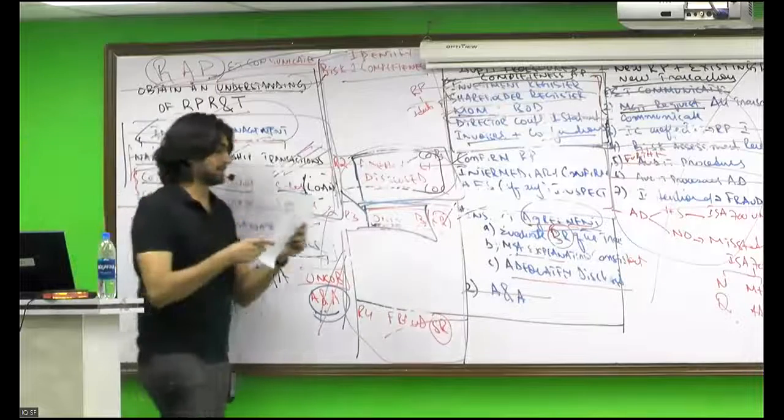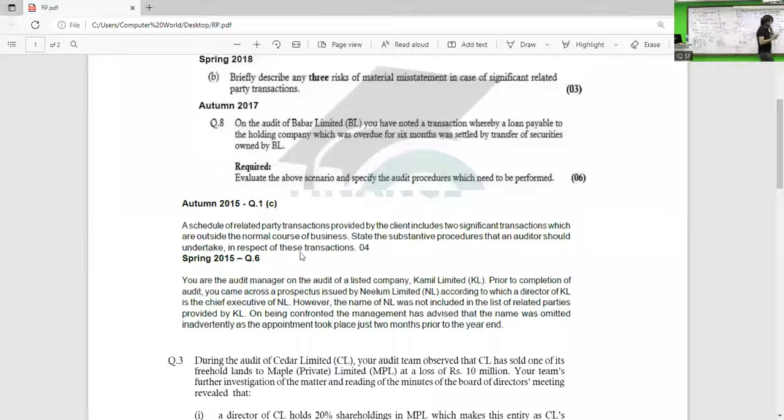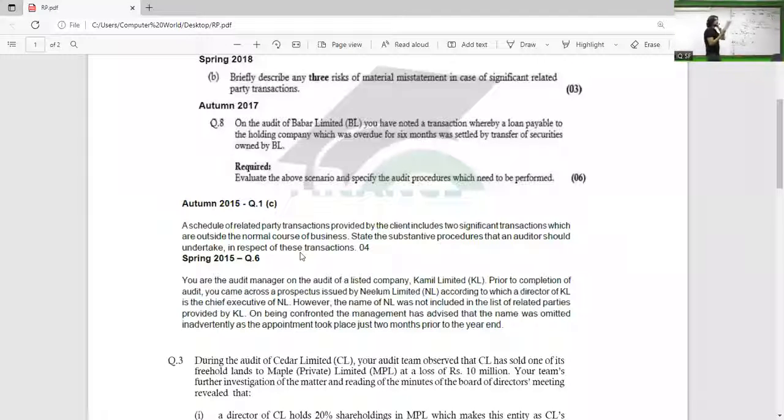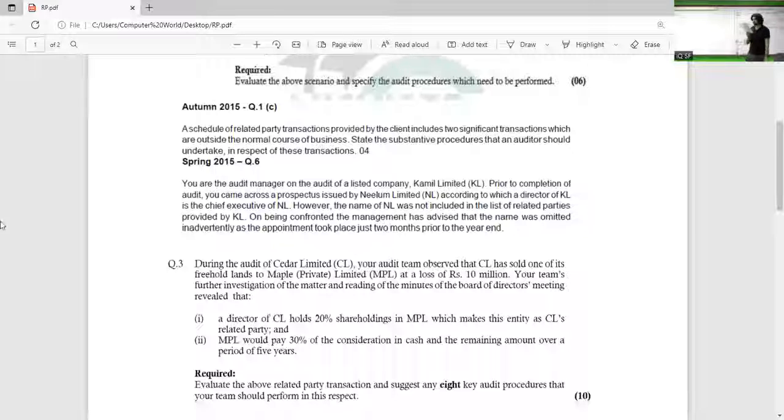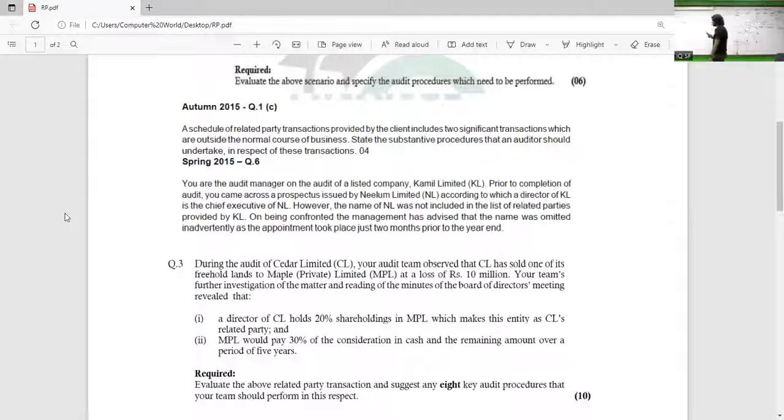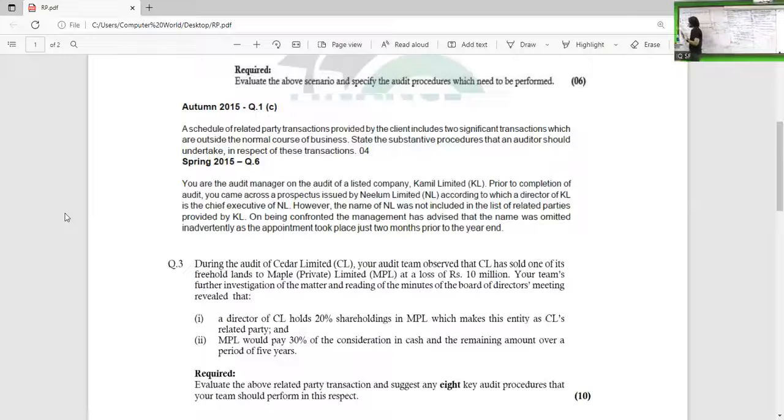Spring 2015. My dear friends, you are the audit manager on the audit of a listed company, Kamil Limited. Prior to completion of the audit, you came across a prospectus issued by Neelam Limited, according to which a director of KL is the chief executive of Neelam Limited. However, the name of Neelam Limited was not included in the list of related parties provided by KL.